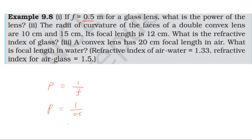1 divided by 0.5 equals 2, so power is equal to 2 diopters. The power is also positive. So the answer to the first question is power equals 2 diopters.